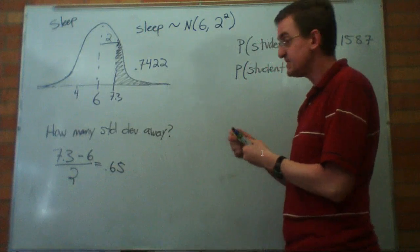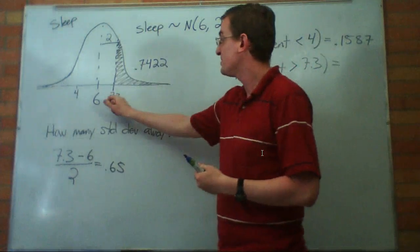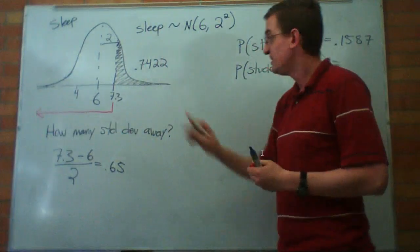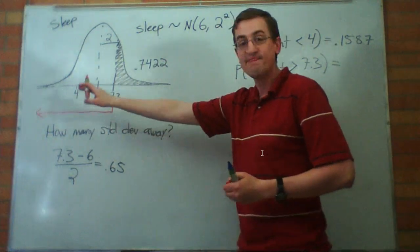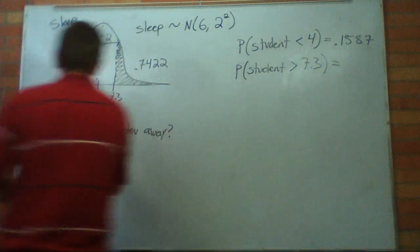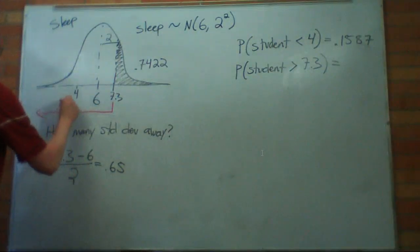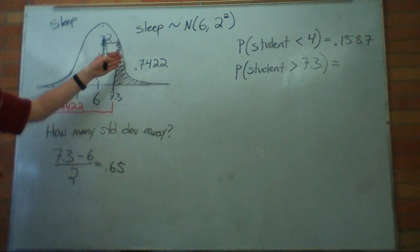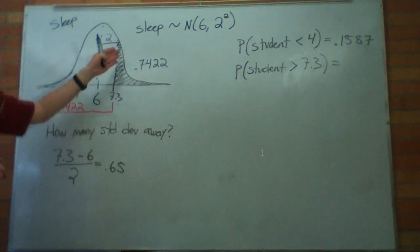Here's what happened. On our z-table, it tells us the area from where we are to the left, always to the left. So from here to the left, that's our 0.7422. Is this area 0.7422? Well, no, it's not. How do we find this area?